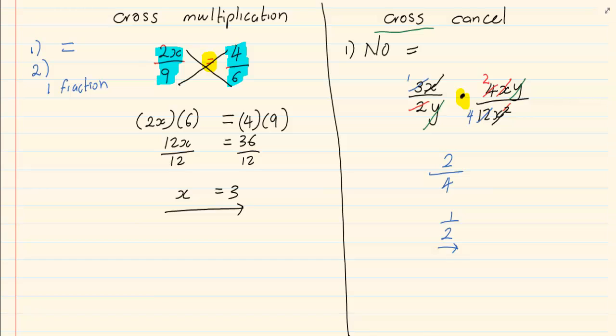These two concepts are usually confused, especially children doing science. They use the cross multiplication rule a lot, but then when they come to cross cancelling, they start cross multiplying, and before you know it, we have a big mess.